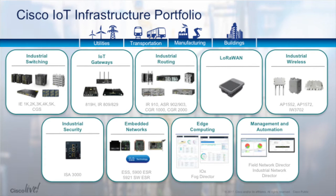At Cisco, what we have done over the years is really build a portfolio to address all those verticals. What is very particular in IoT compared to what you see in the IT field is the requirement in terms of form factor as well as ruggedization — devices that can run in extreme temperatures, a lot of dust, humidity, and things like that — really built and certified for different verticals like utilities and so on.